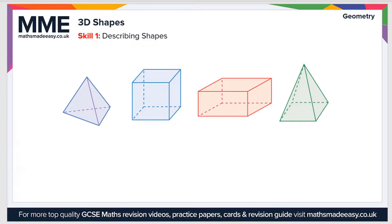The first key term is vertices — vertices are the corners of shapes. This here is a vertex, which is the singular form; vertices is the plural. The next key term is edges: edges are the straight sides on the edges of a 2D shape.